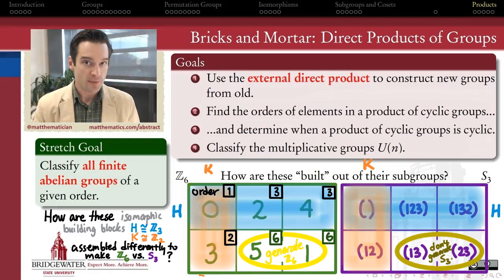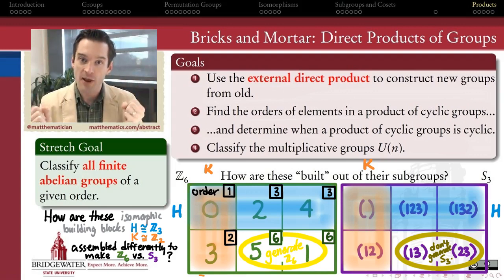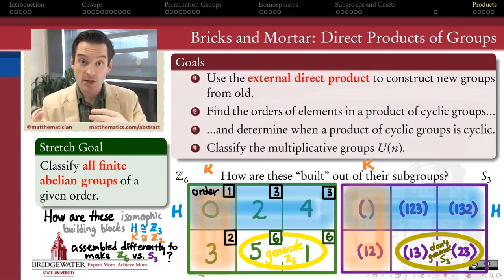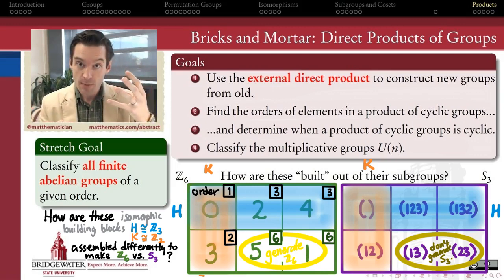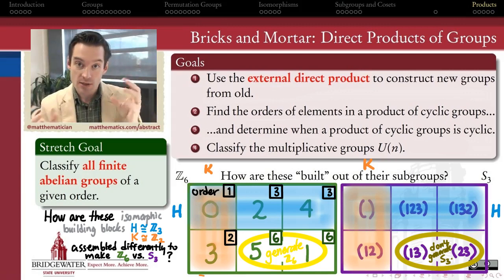Direct products of groups are our first key tool to understand: if I have two small groups that I understand really well, how do I combine their forces into a larger group of which each of those original pieces can be seen as a subgroup, but which can have much more interesting and rich structure than each of these groups individually had.